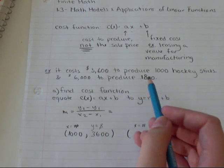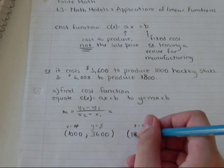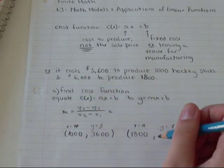And then in the second one, to make 1,800 hockey sticks, the cost is $6,000.